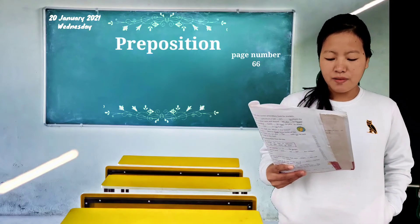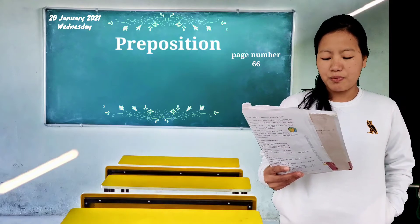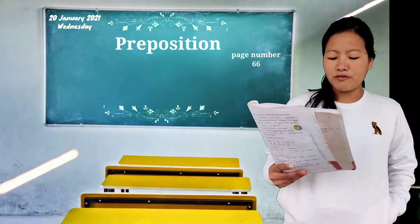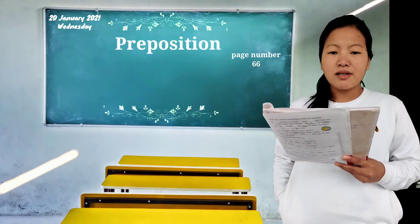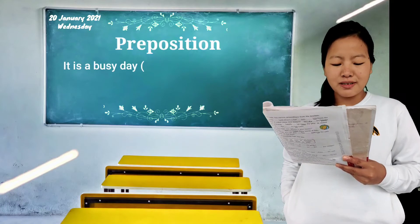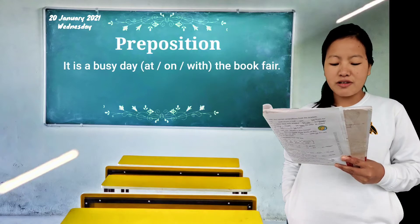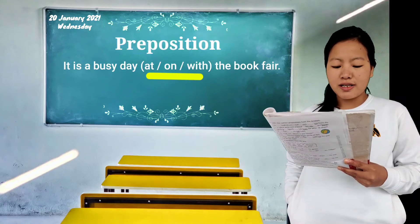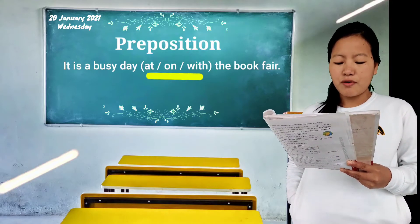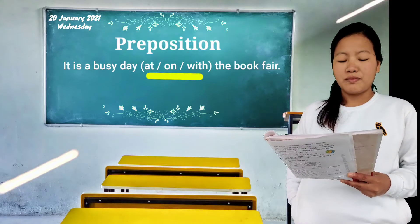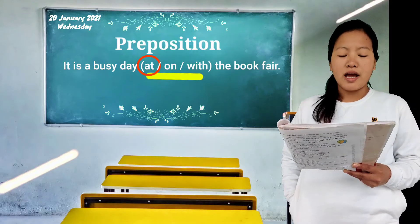Open page number 66. Here they are giving three examples with prepositions — we have to find out the right preposition. The first example is: 'It is a busy day _____ the book fair.' In the bracket they are giving three options: at, on, with. Now, which is the correct preposition?